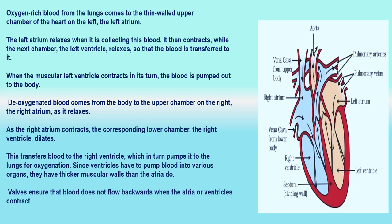The job of the heart is to pump blood around our body. All the atria and ventricles of the heart contract and relax at appropriate times, making the heart behave like a pump. Since ventricles have to pump blood into various organs with high pressure, they have thicker walls than atria. A sheath of tissue called the pericardium protects the muscular heart. The chambers of the heart are separated by a partition called the septum.